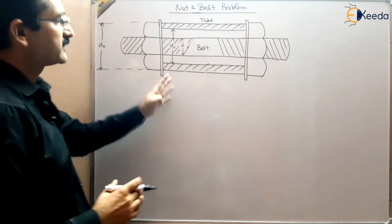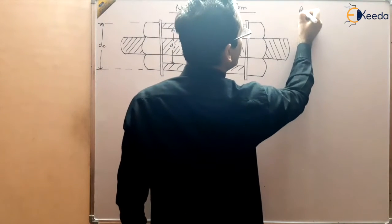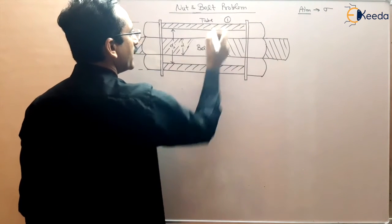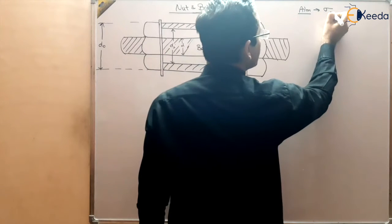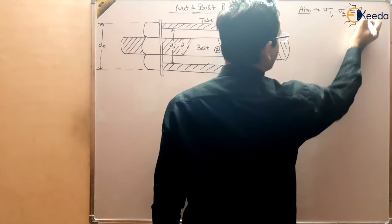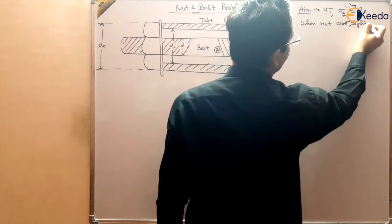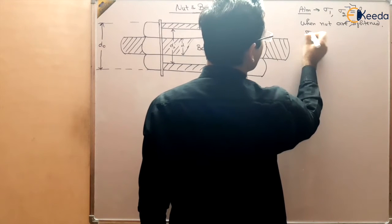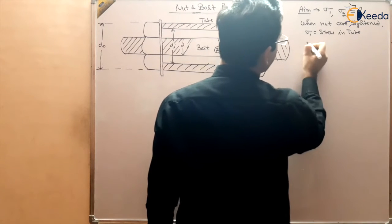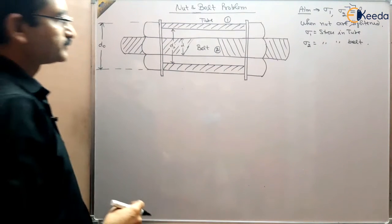Our aim is to find out the stresses — stress in tube and stress in bolt when the nut is tightened. So sigma 1 is the stress in the tube, and sigma 2 is the stress in the bolt. Our aim is to find out these stresses when the nut is tightened.